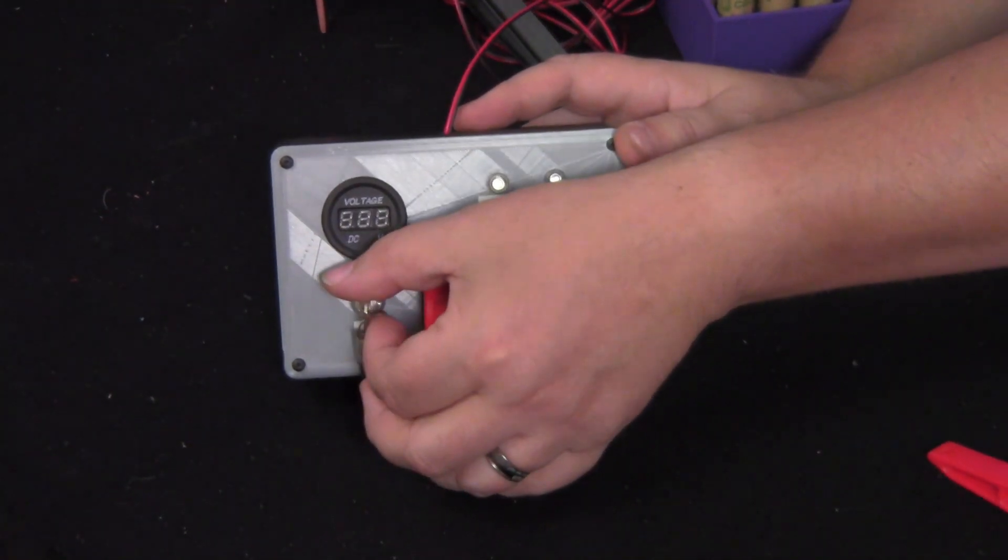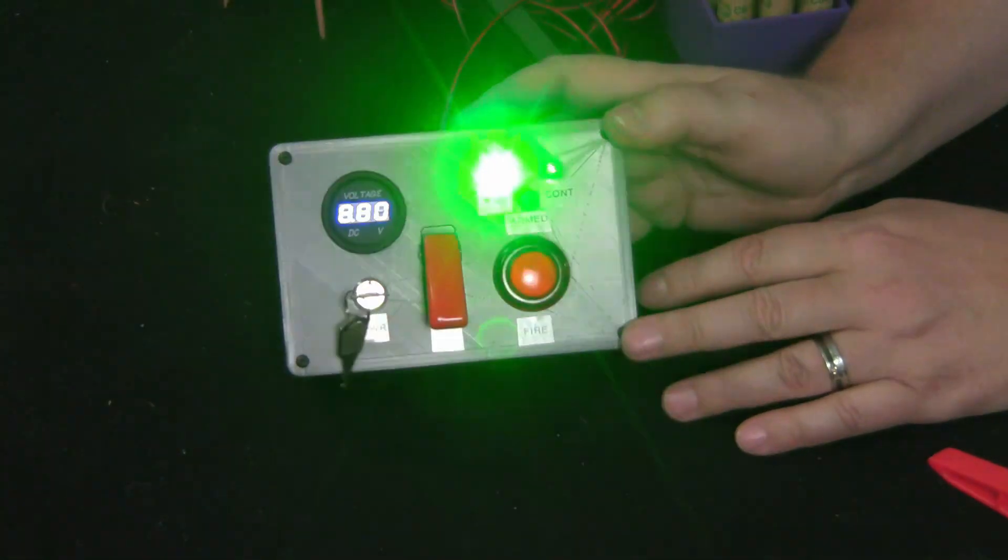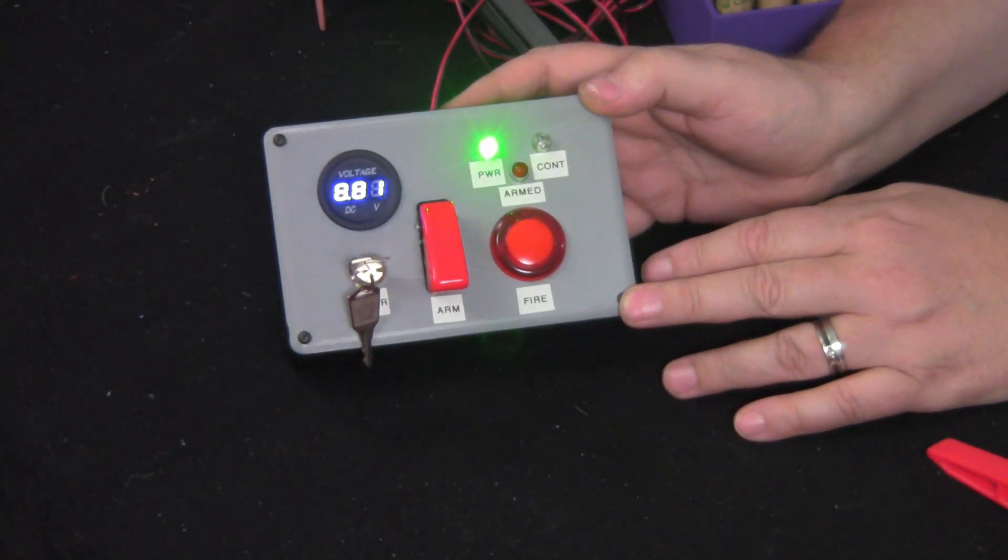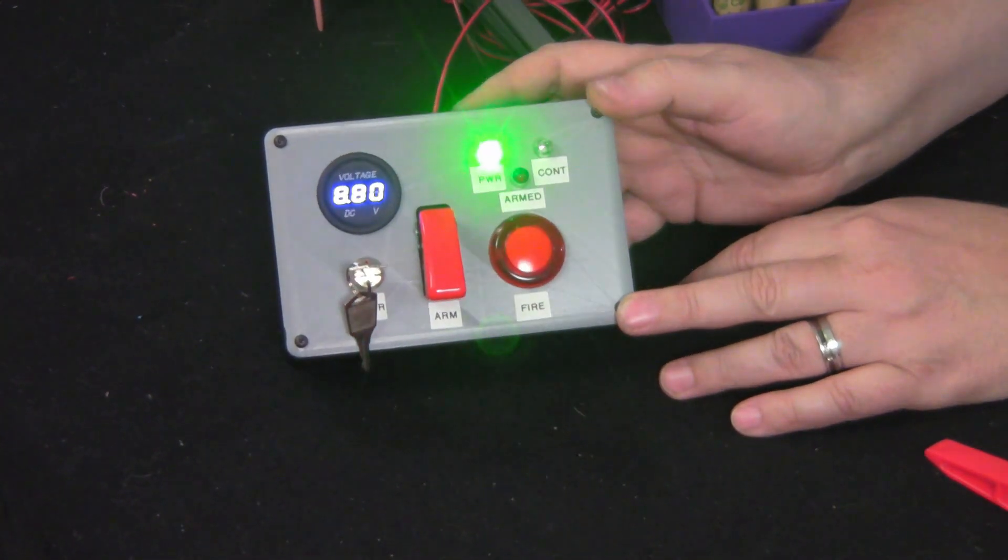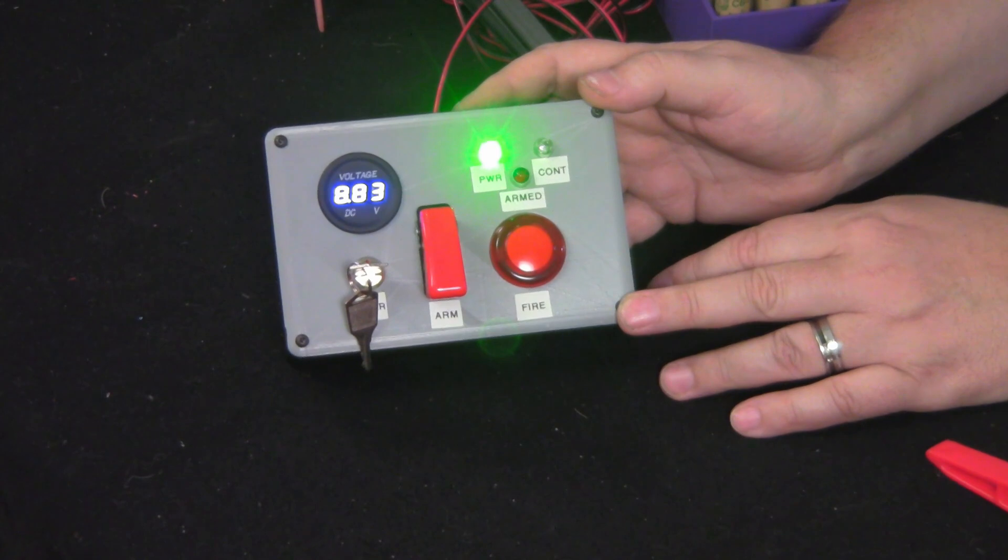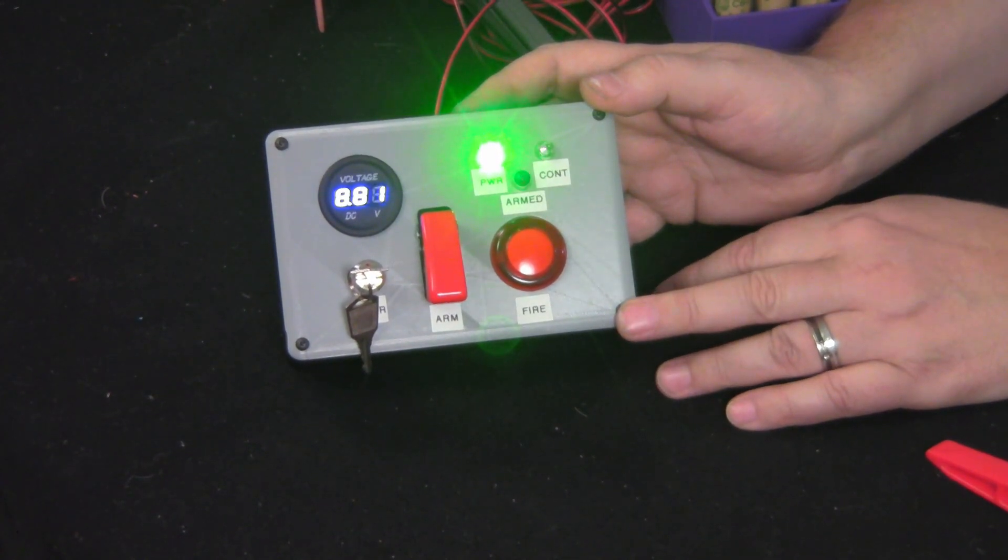Right now, it's using a 9-volt battery, but we've put in a few extra safety measures. First of all, you have to turn the key to activate. That's a pretty bright light. And you can see right now we're at 8.80 volts.